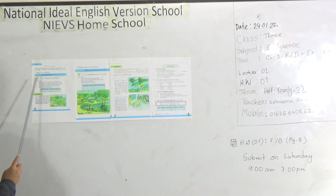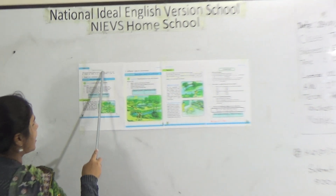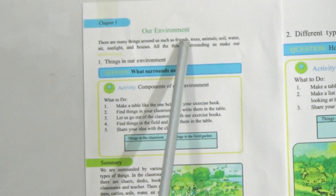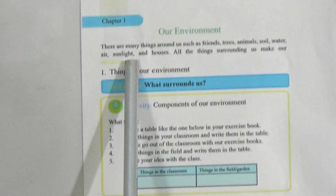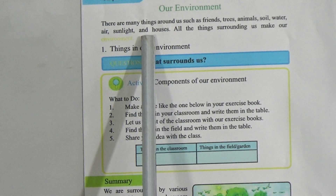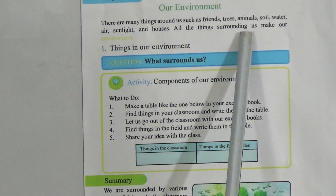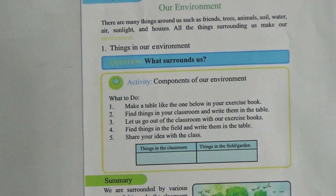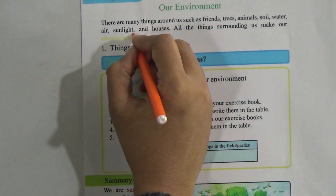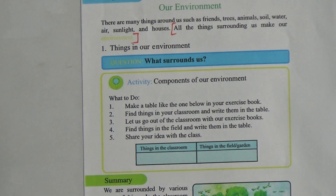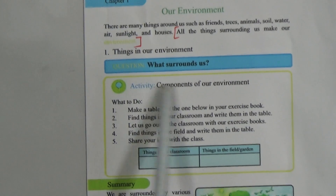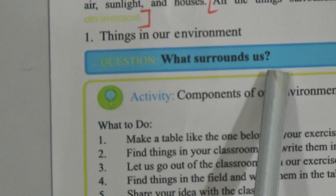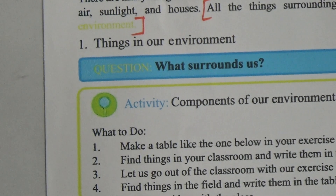Dear students, the name of Chapter 1 is 'Our Environment.' There are many things around us such as friends, trees, animals, soil, water, air, sunlight, and houses. All the things surrounding us make our environment. This is the definition of environment. Now, the question arises: what surrounds us?